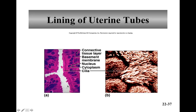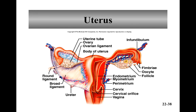Fertilization will occur in the uterine tube. The uterus functions to receive that fertilized egg. If the egg implants in the uterine tube and starts to develop there, you get something called an ectopic pregnancy, which is dangerous — the fetus can't grow in there.